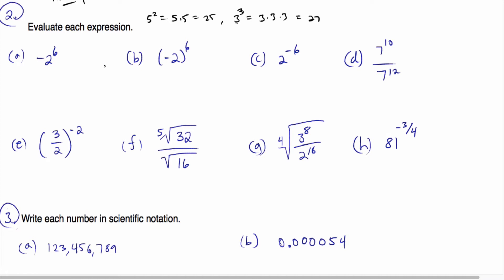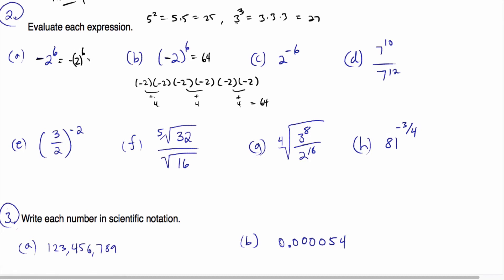In part A, the negative is sitting out in front, as opposed to part B where the negative is inside the parentheses. In part B, we're taking negative 2 and raising it to the sixth power, so we're writing negative 2 times itself six times. Because we have an even number of negative signs, pairs of negatives make positives: 2 times 2 is 4, giving us 4 three times — so this is really 4 cubed, which is 64. Over here in part A, because the negative is sitting out in front, this is equivalent to negative 2 to the sixth, so this would be negative 64.